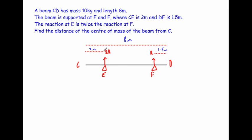So first of all I'm going to find what R is. There's going to be a centre of mass - let's put it slightly closer to where there's the greater normal reaction. We know that the mass of the beam is 10 kilograms, so the weight equals 10g, or 98 newtons. So let's find out what R is.